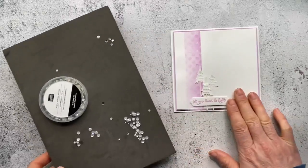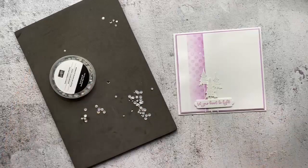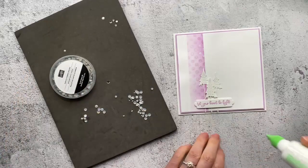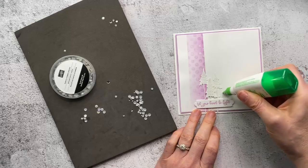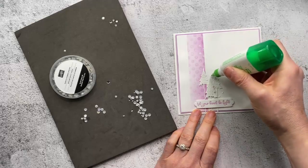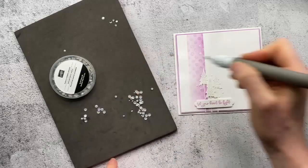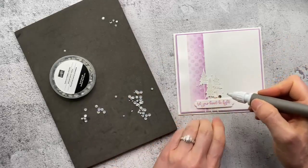For some embellishments I'm going to use the subtle shimmer sequins and I find it's easiest to put down a dot of glue onto your project first decide where they're going to go and then you can just drop the sequins on top of the glue.